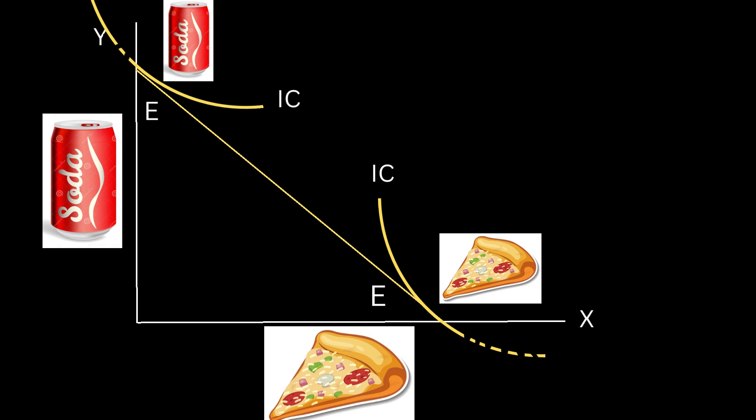A corner solution can arise due to various reasons. It could be because of personal preferences, budget constraints, or the unavailability or undesirability of certain options. The consumer may find that fully investing in one option or completely ignoring another is the most optimal or satisfying choice for them given the circumstances. Such corner solutions are important to understand how individuals take decisions, what constraints they face, and what are their preferences. It helps economists and policy makers to study market behavior, resource allocation, and the impact of policy changes.